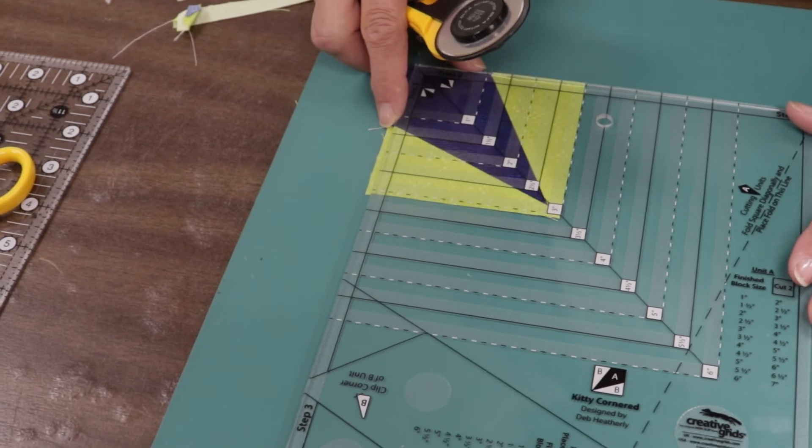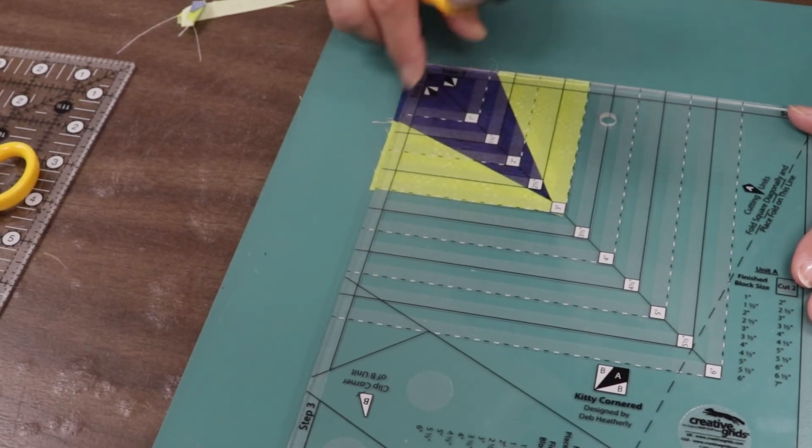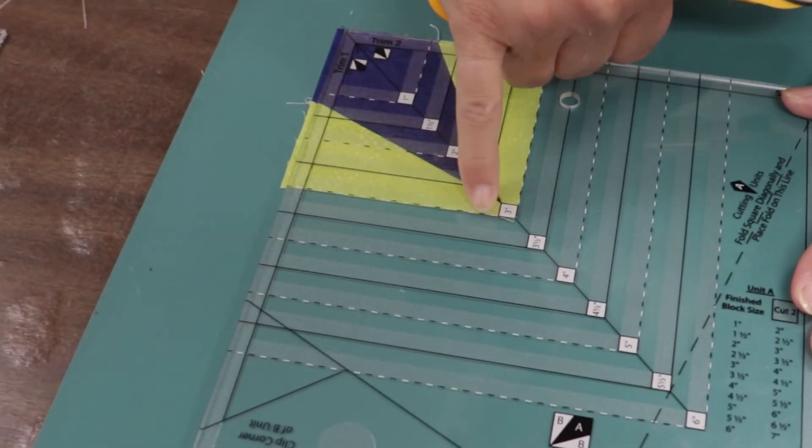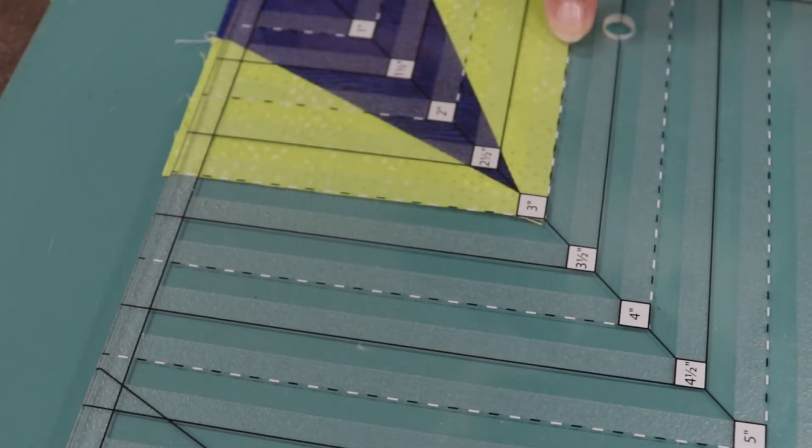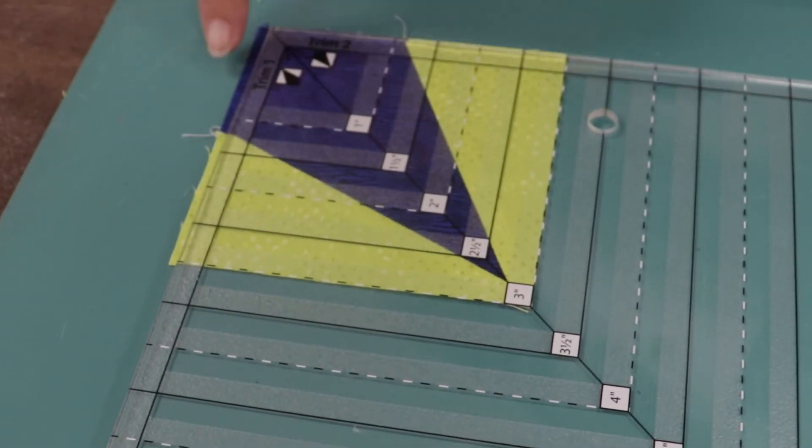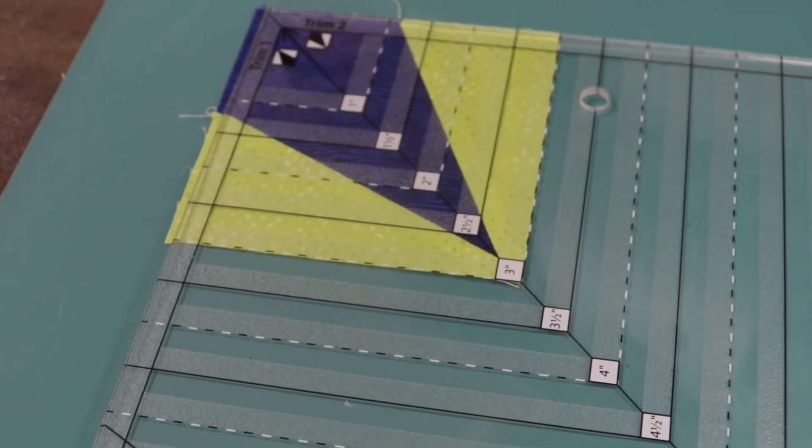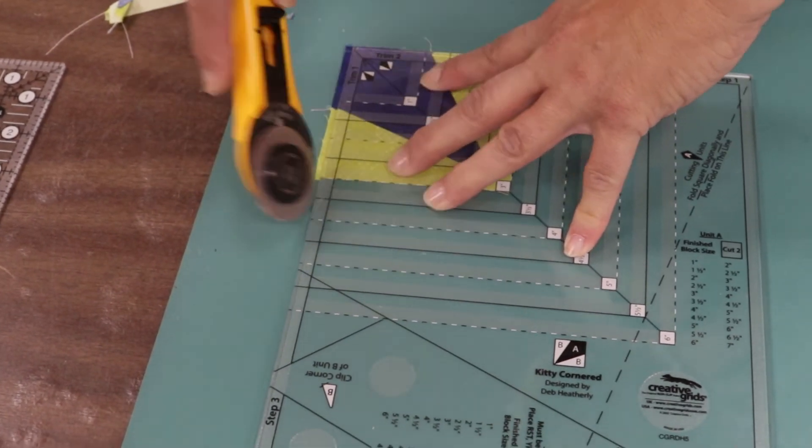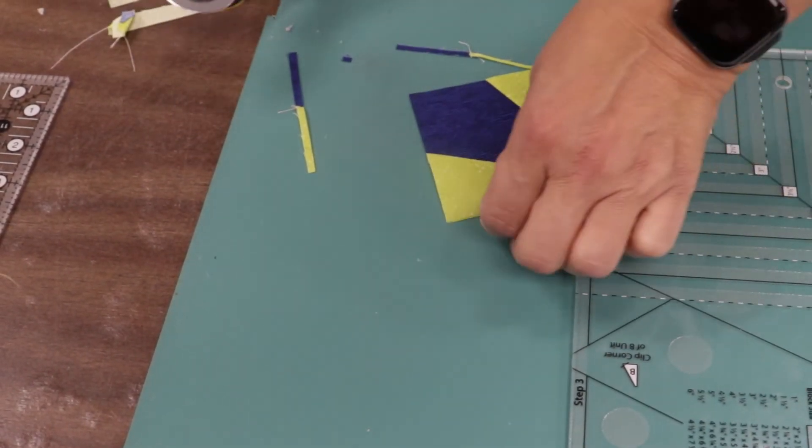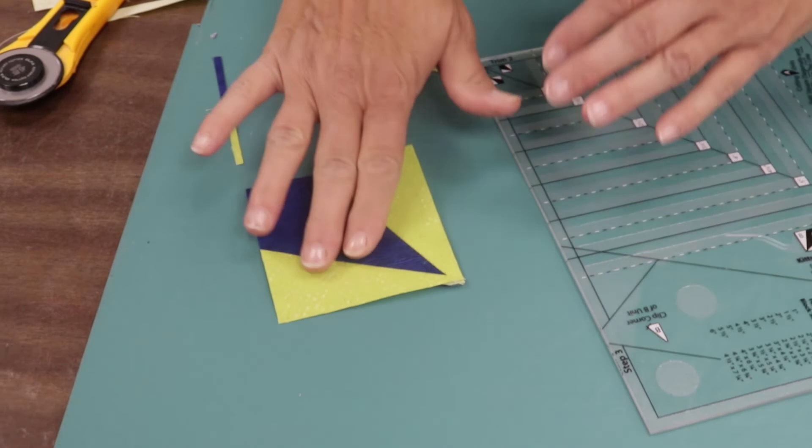So we've done trim one and two. We're going to turn this around and we're going to lay our nice trimmed edge right into the three marking. So as you can see, the three has this dashed line going through here and down this way. So now we can trim that side and we are finished with our kitty cornered unit. So here we are.